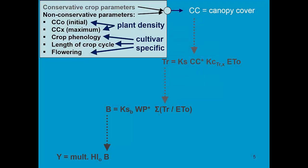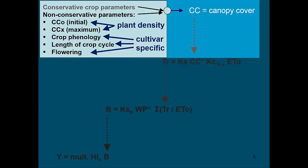Green canopy cover is simulated by considering conservative crop parameters. These we do not have to change. But there were also non-conservative parameters, like the initial and the maximum canopy cover CC0 and CCX. Their value depends on the plant density. And there are also cultivar specific parameters, like the crop phenology, the length of the different stages, the length of the crop cycle, and when flowering occurs. So the mismatch of the simulation might be due to not proper tuning of the non-conservative crop parameters.